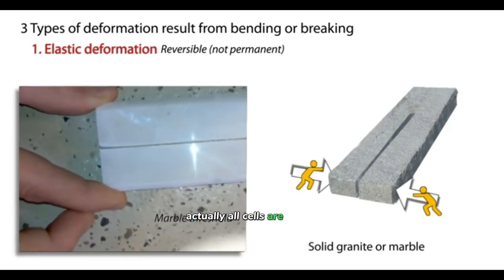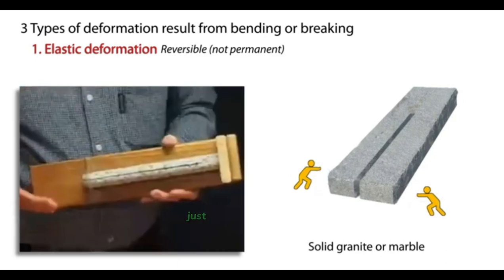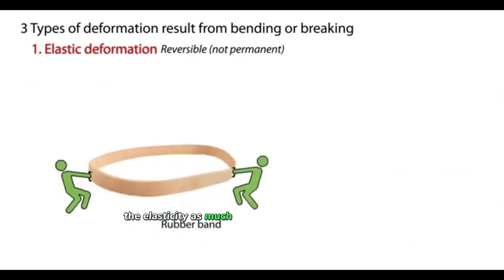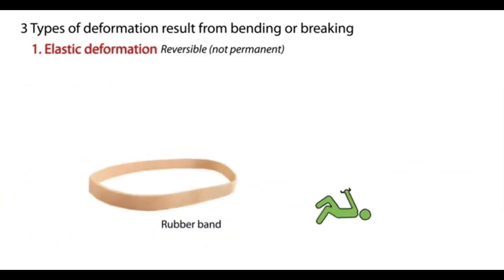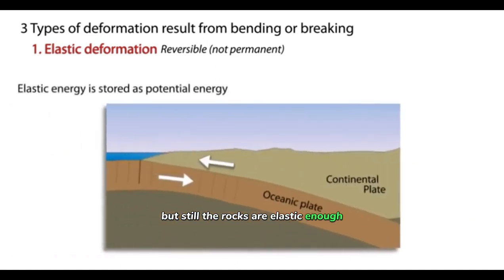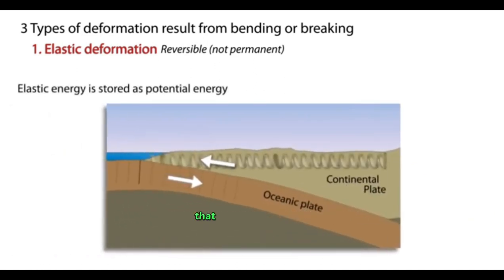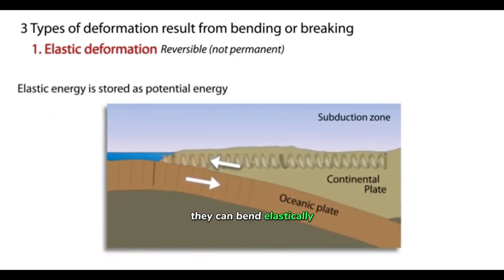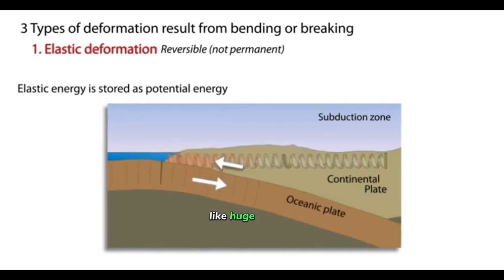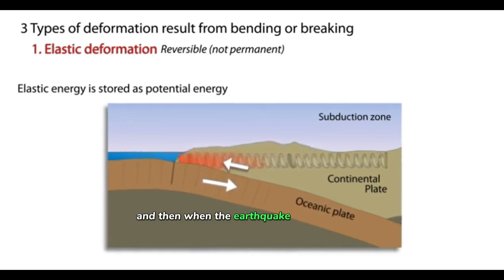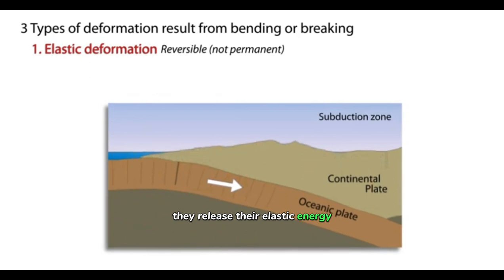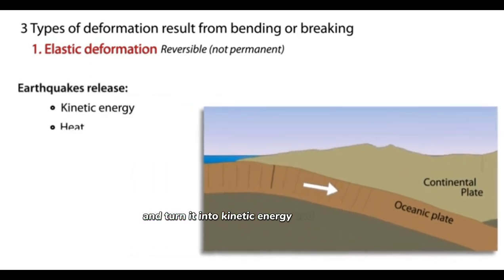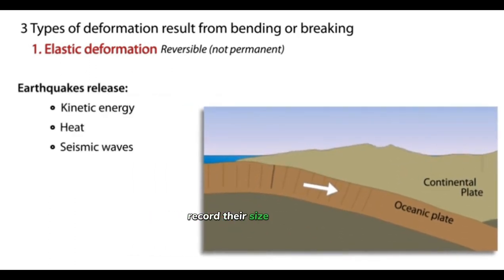Rocks are elastic. Actually, all solids are elastic — it's just that we don't really notice the elasticity as much as in something like rubber, which is very, very elastic. But still, rocks are elastic enough that when plates move, they can bend elastically like huge springs, and then when the earthquake happens, they release that elastic energy and turn it into kinetic energy, heat, and into the waves recorded by seismometers.